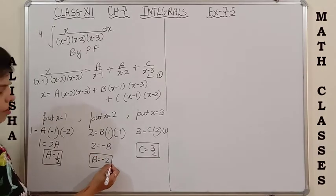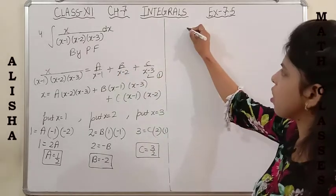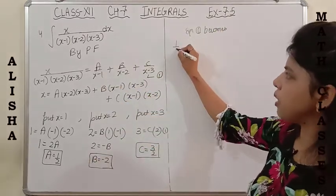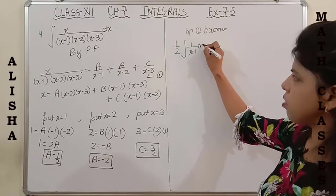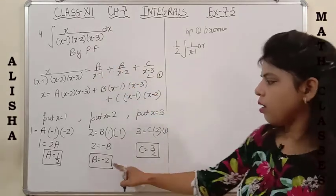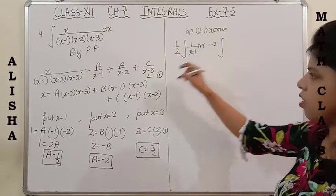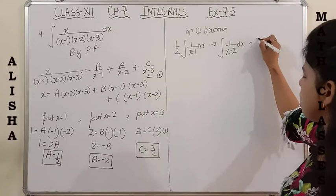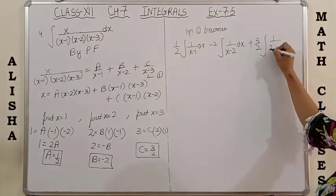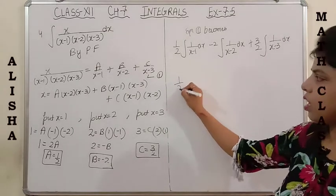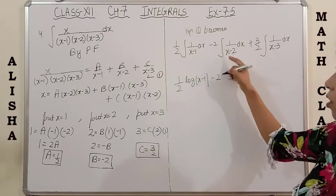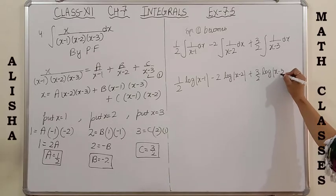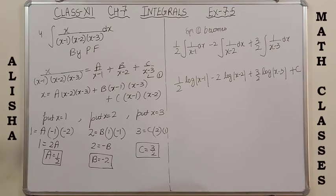Substituting the values A = 1/2, B = −2, C = 3/2 into the integral: (1/2)∫1/(x−1)dx − 2∫1/(x−2)dx + (3/2)∫1/(x−3)dx = (1/2)log|x−1| − 2log|x−2| + (3/2)log|x−3| + C. Please note down this answer.